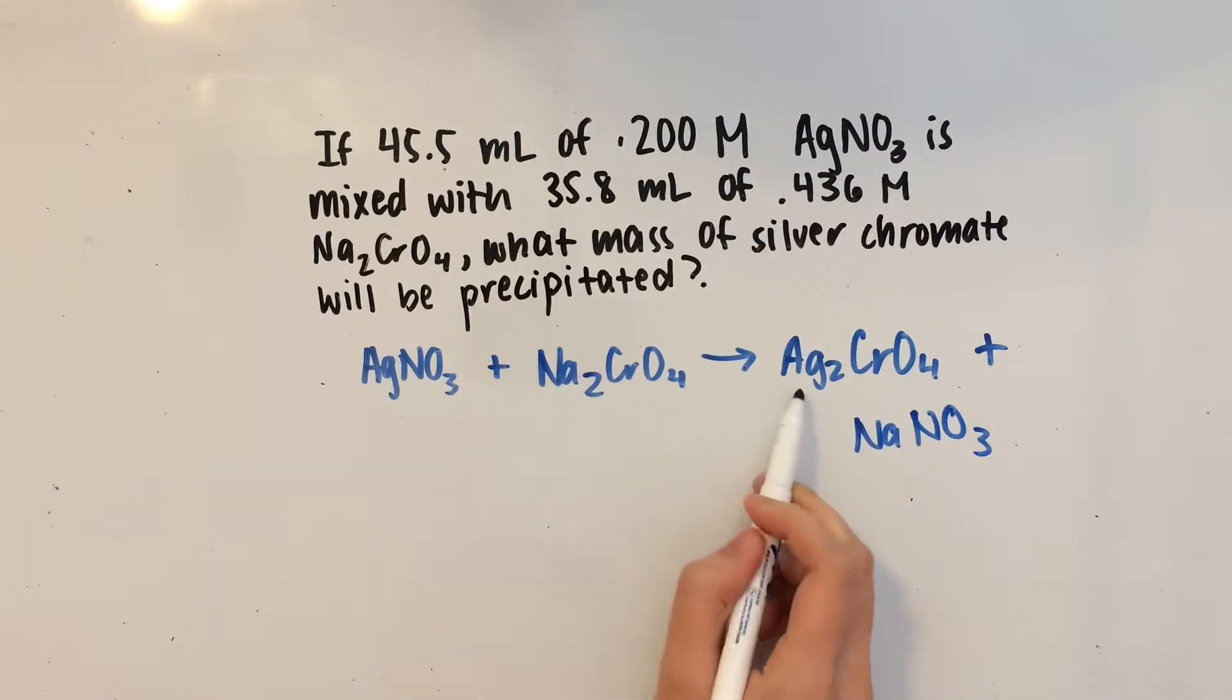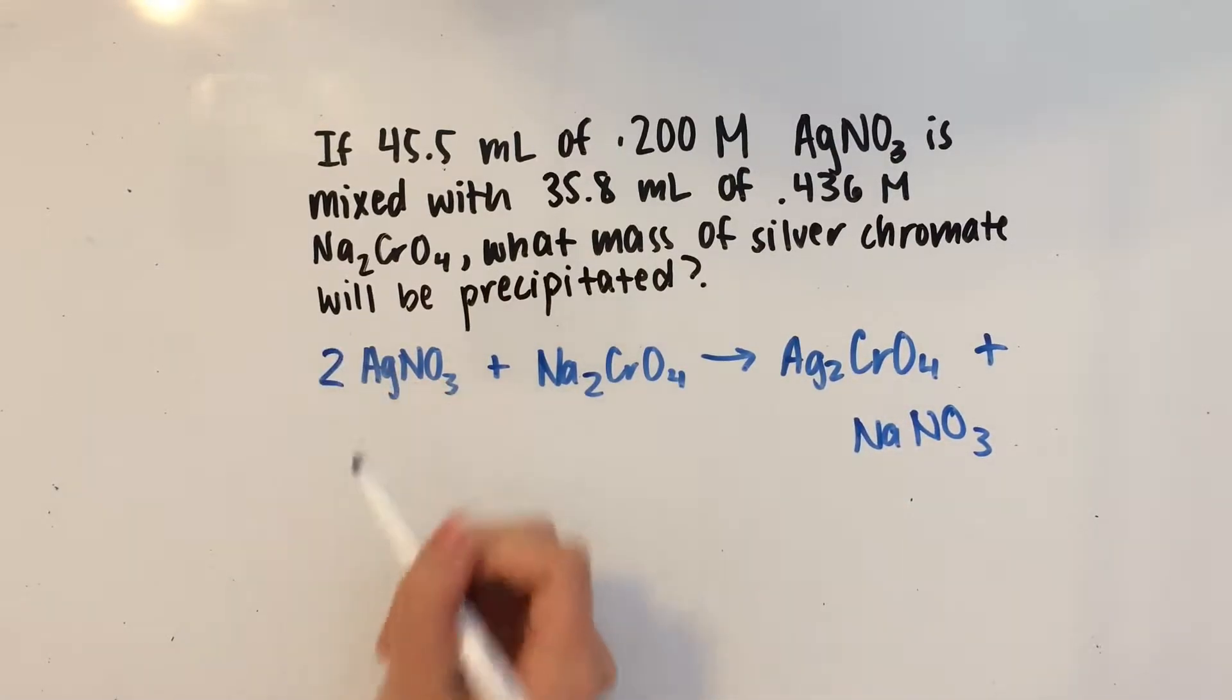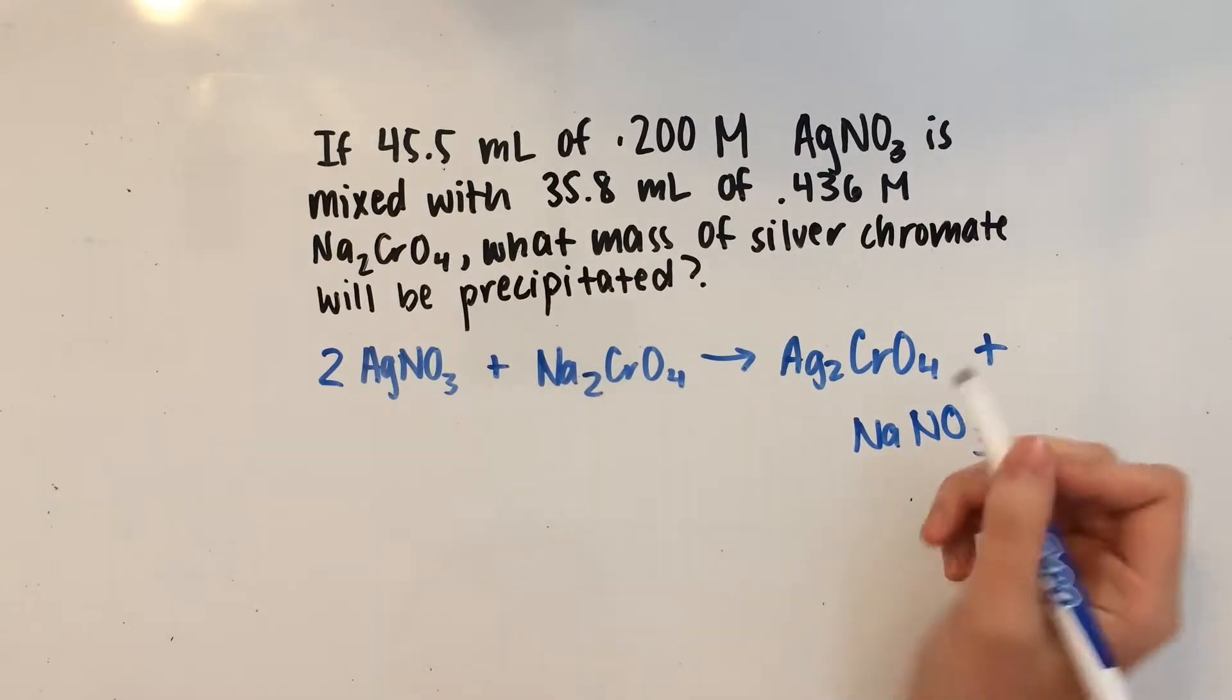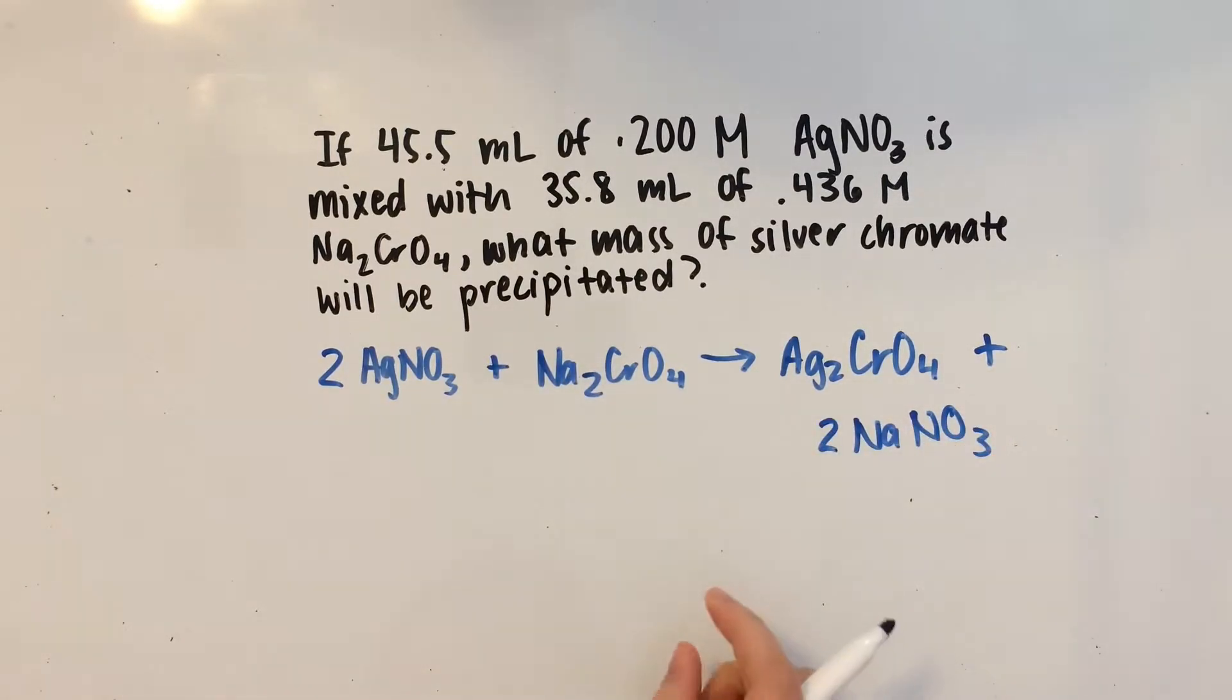Now, I see that we have two silvers on this side of the equation, so I'm just going to write a 2 in front of AgNO3. And it looks like we have two sodiums on the left side, which means we need to add two sodiums over here. So that should be it. We have two silvers, two nitrates, two sodiums, and one chromate.